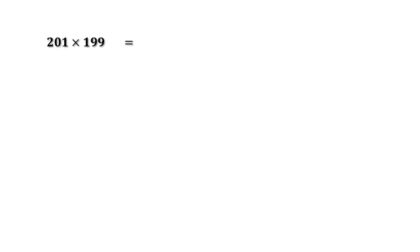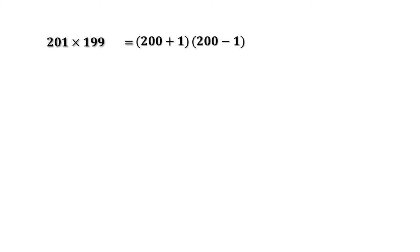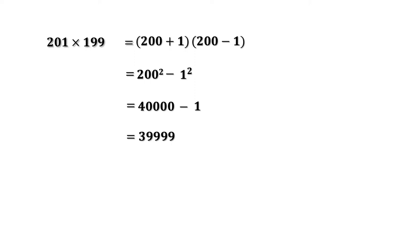Fourth part: 201 into 199. This is 1 more than 200 and 1 less than 200. So this can be written as (200 + 1)(200 - 1) = 200² - 1². The square of 200 is 40,000 and 1² is 1. So this equals 40,000 - 1 = 39,999. That means 201 into 199 is 39,999.